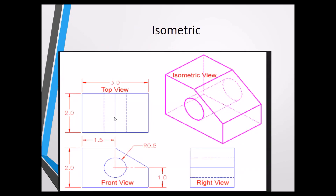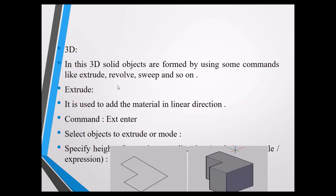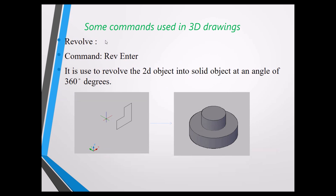For isometric drawing examples, we draw figures using Line and Ellipse commands, showing top view, front view, and right side view. For 3D figures, we first draw a 2D sketch and then use 3D tools to convert it. Extrude (EXT Enter) adds material in a linear direction. For Revolve, draw a 2D sketch, use the Revolve option, specify the axis, and the sketch is completely converted into a 3D object.